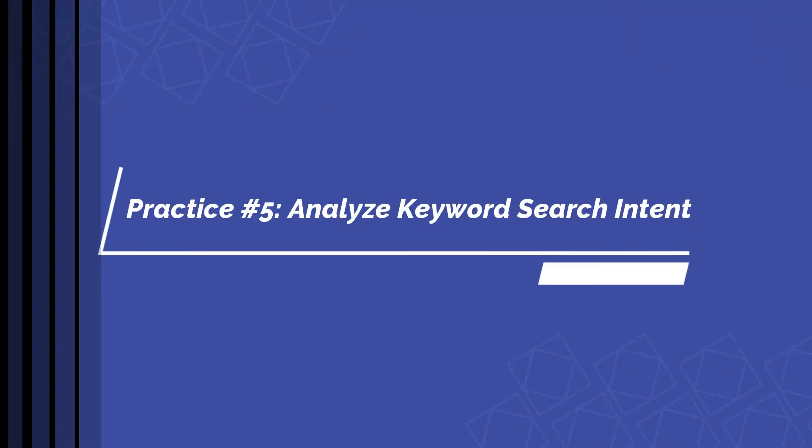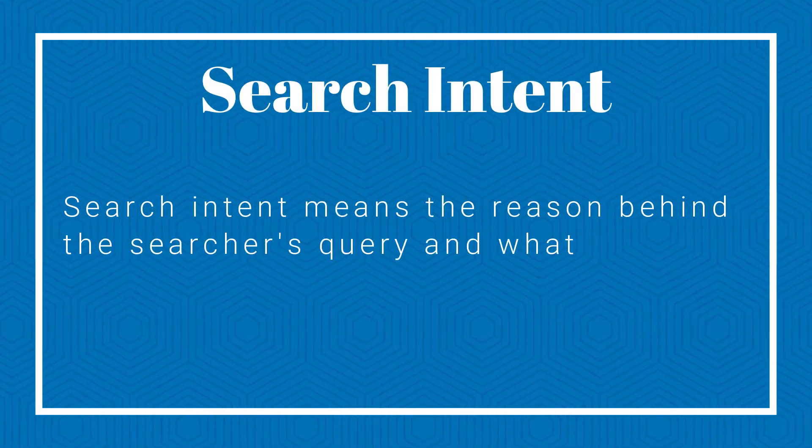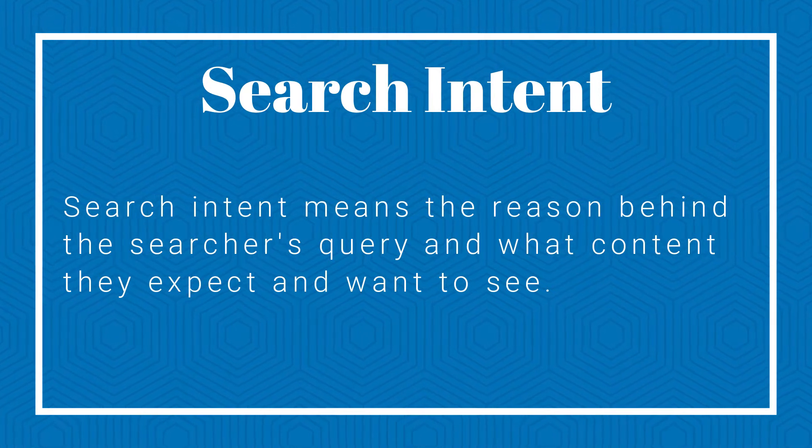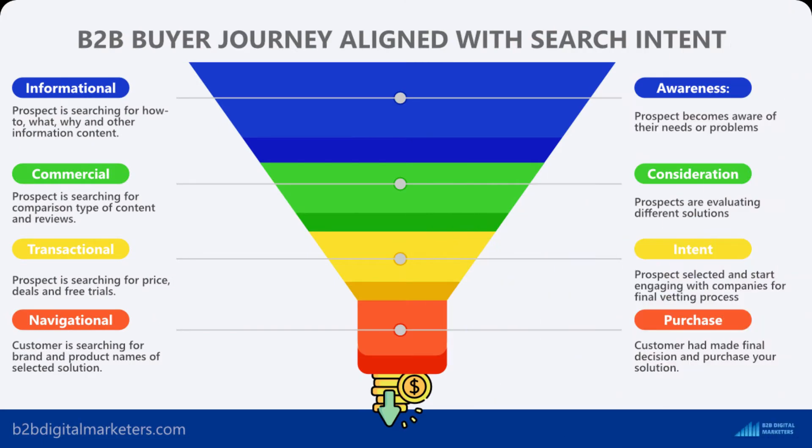The next important practice is to analyze search intent for your targeted keywords. Search intent means the reason behind the search query and what content the user expects to see. It gives you essential information on what content you should create to target the keyword, as well as whether the keyword is a primary or LSI keyword. Also, search intent helps you to target keywords across all stages of the buyer journey to maximize your SEO potential from B2B blogging.